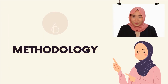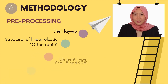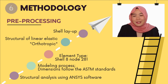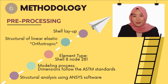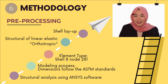Now let's move on and look at the methodology. This part will cover the pre-processing done, convergence analysis, the boundary conditions, and the loading type. The first step in pre-processing is setting up the preferences for structural analysis using NCS software. In the modeling process, the specimen dimensions follow the ASTM standards. The shell element node 281 is selected as the element type. The material properties of the model are then defined as structural linear elastic orthotropic. The layup sequence of the laminates are then defined by adding the shell layup according to the thickness and fiber orientation of the specimen. The slide shows the mechanical properties of kernel and carbon fiber reinforced polymer composites used for the simulation.